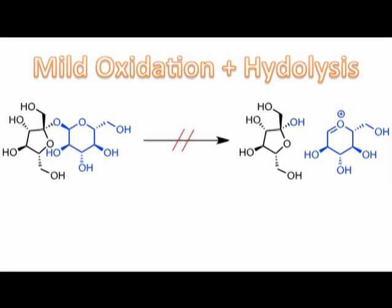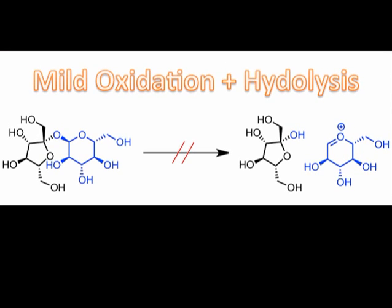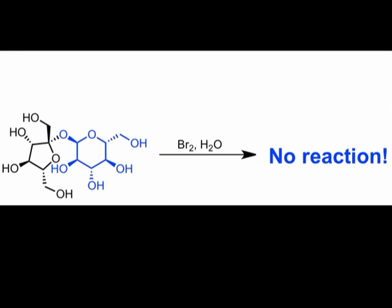Consistent with this idea, when we treat a 1-1 connected disaccharide with aqueous bromine, no reaction occurs. The sugar and bromine can be recovered unchanged.